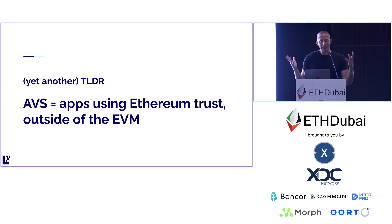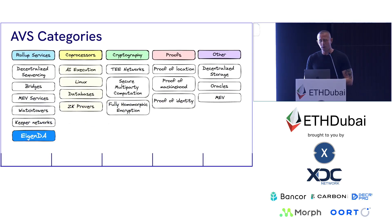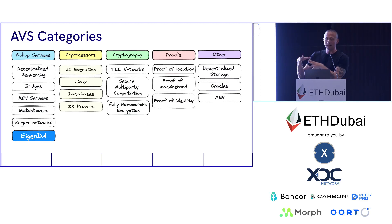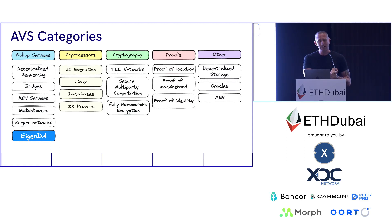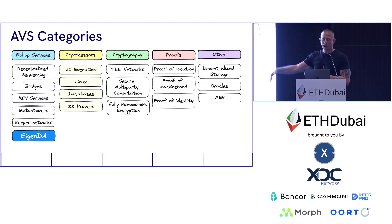Another TLDR about AVSs: it's basically an app using Ethereum trust outside of the EVM. So what are some categories of what can be built? A lot of stuff doesn't fit into any single category, but we've put together a categorization that works pretty well. You could almost consider everything on the top layer fitting into the rollup services category — but within that we have more specific categories like core rollup infrastructure pieces such as sequencers and bridges.